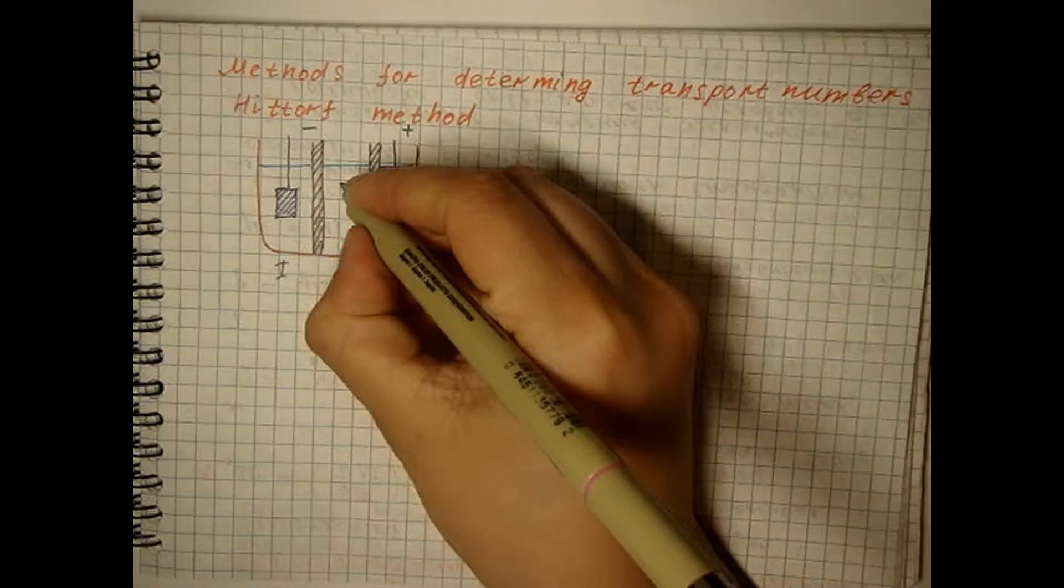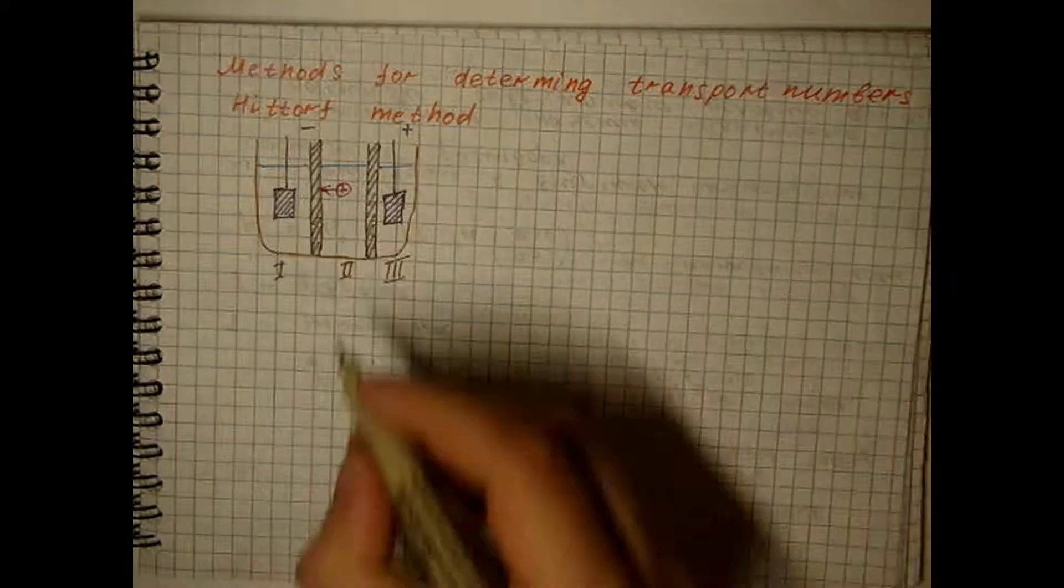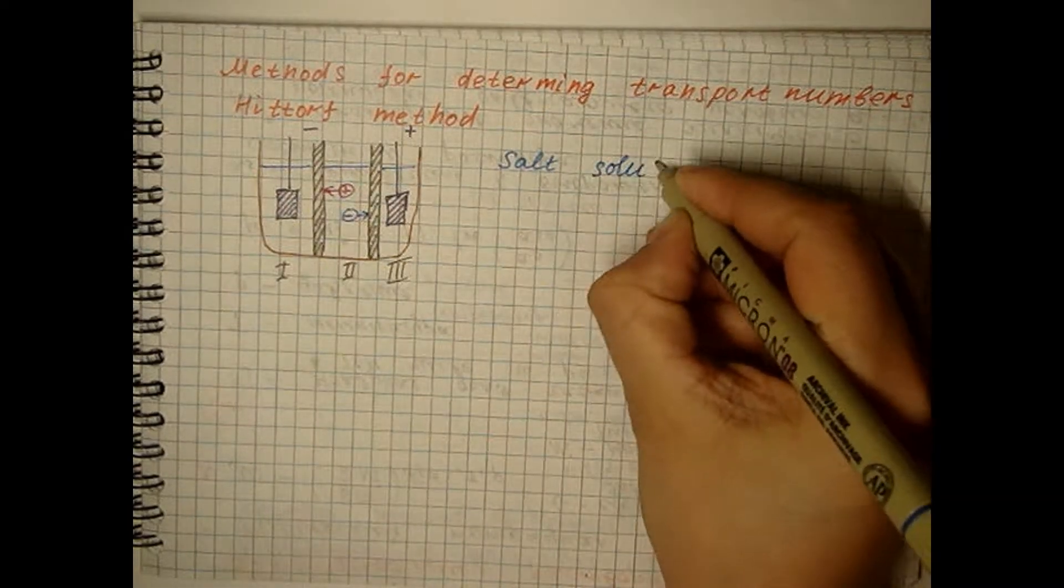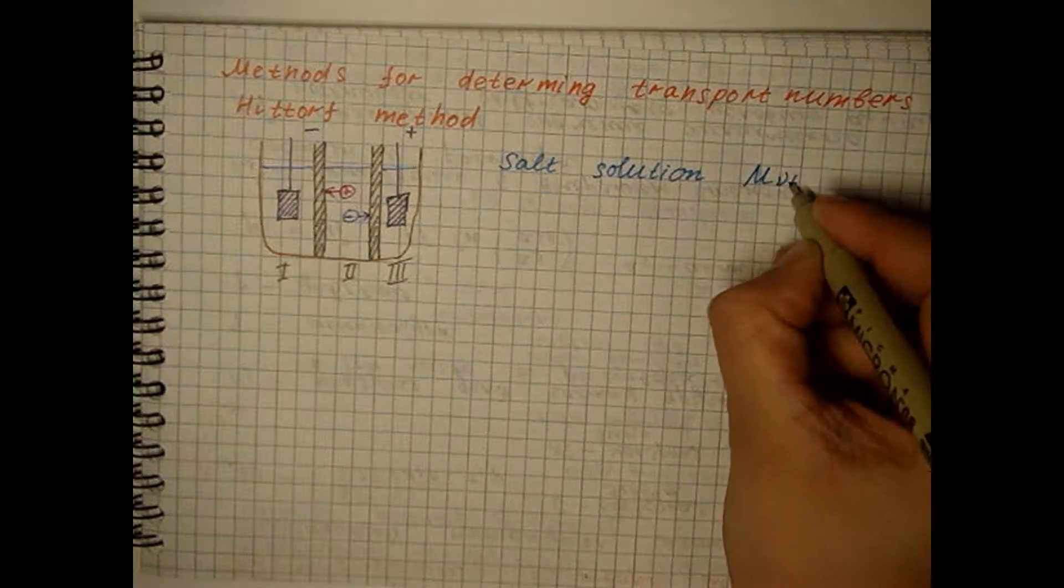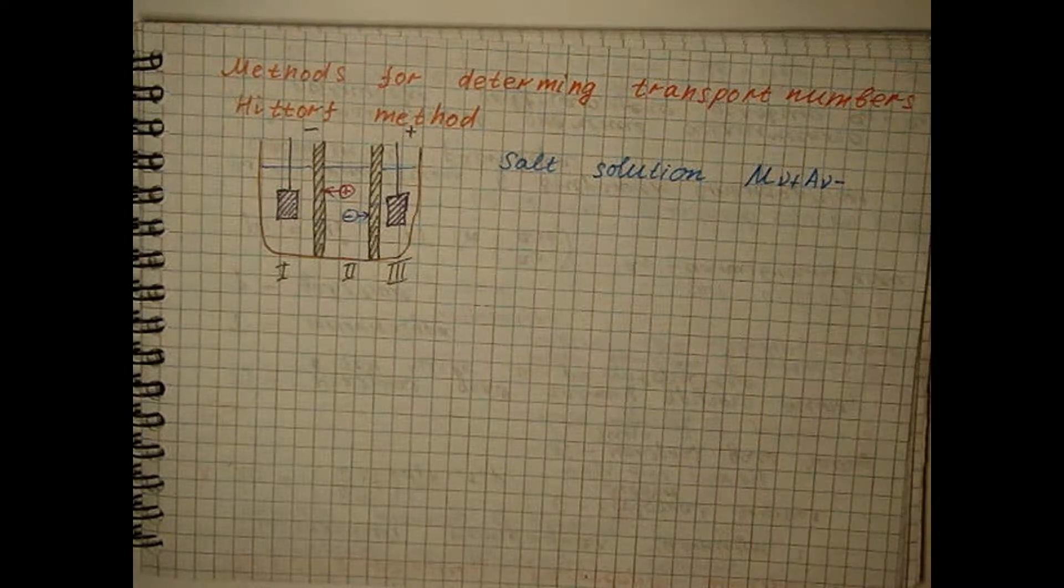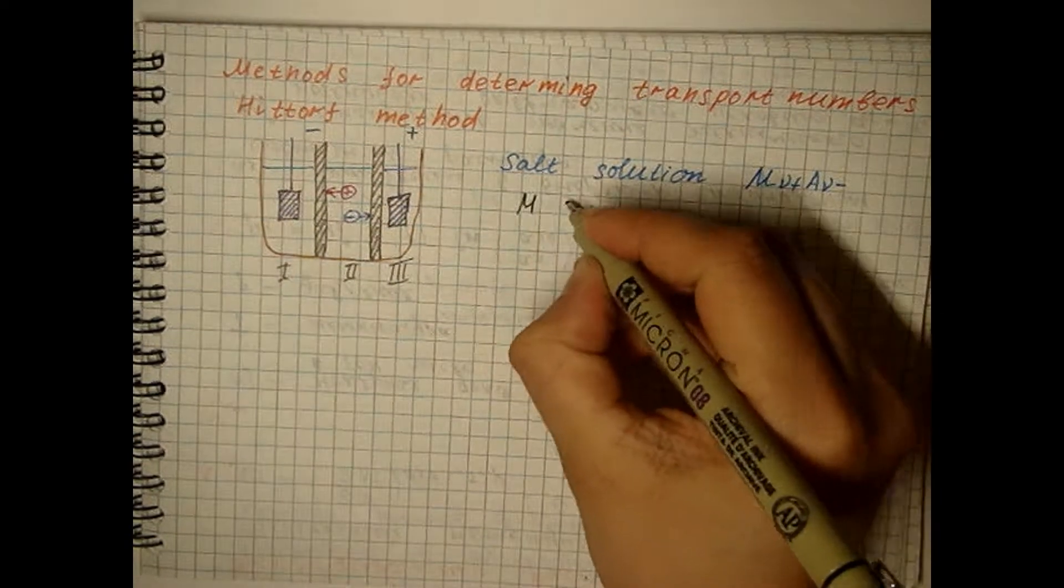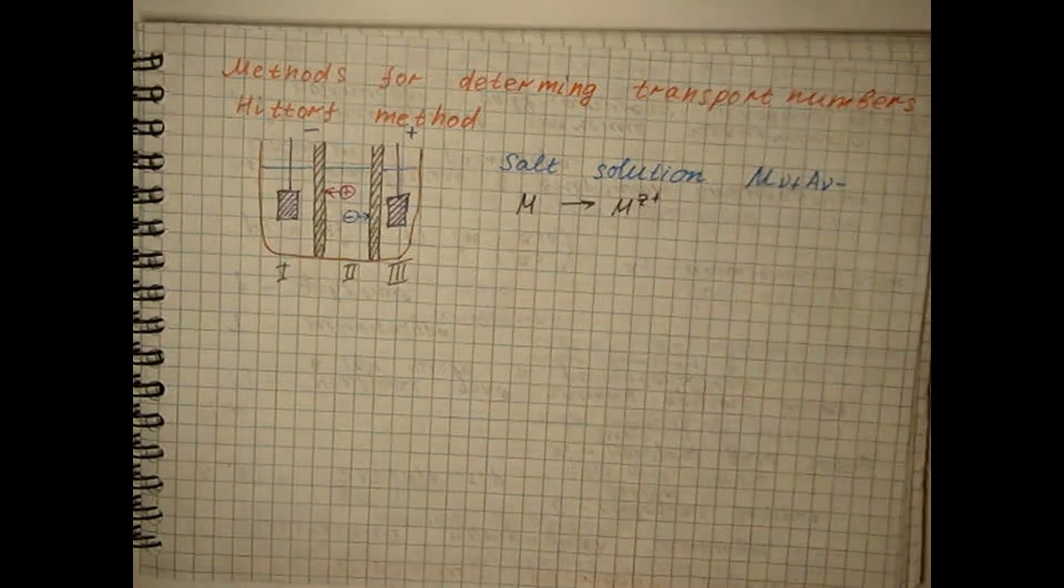Initially, in each of the compartments is a salt solution with the same concentration. Both electrodes are made of metal corresponding to cations. For example, copper for a solution of copper sulfide.